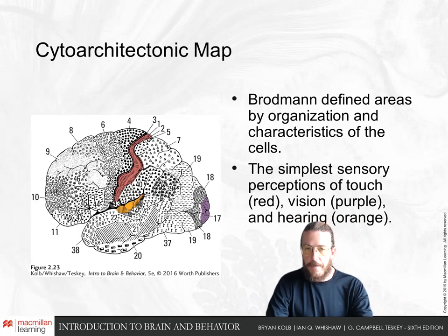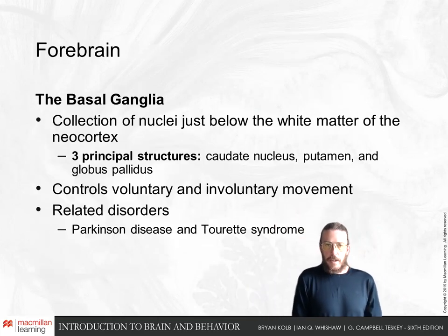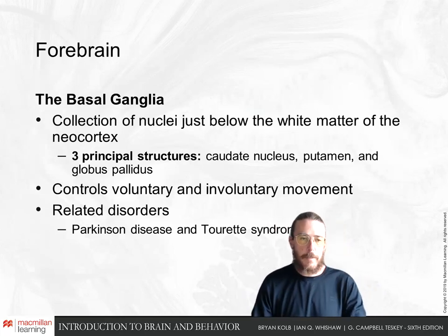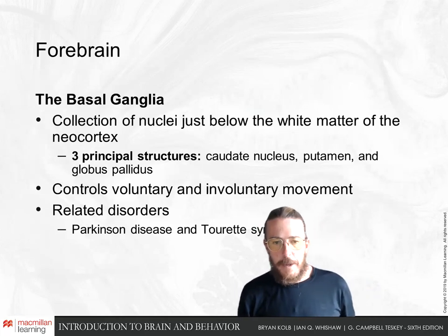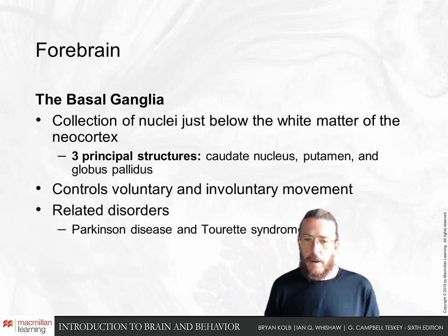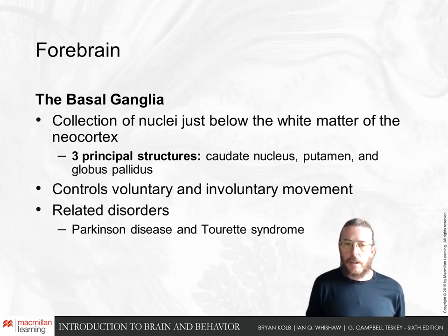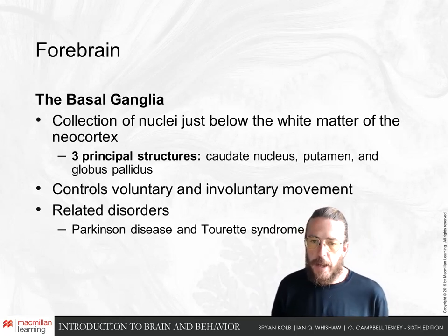In color images, we can see where primary visual, primary auditory, and primary somatosensory information from our skin enters the brain. The basal ganglia are a collection of nuclei just below the white matter, composed mainly of three structures: the caudate nucleus, the putamen, and the globus pallidus ('pale globe'). They control voluntary and involuntary movement, and disorders like Parkinson's and Tourette's syndrome are breakdowns of the basal ganglia — Parkinson's reflecting increased basal ganglia activity clamping behavior, and Tourette's reflecting insufficient clamping.